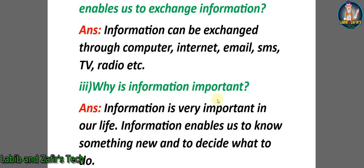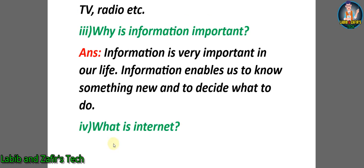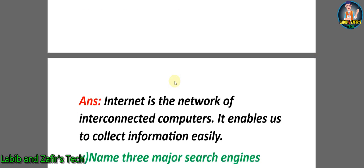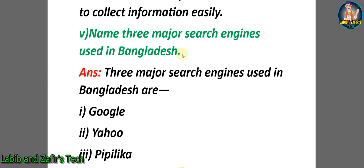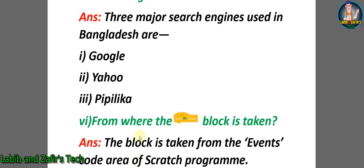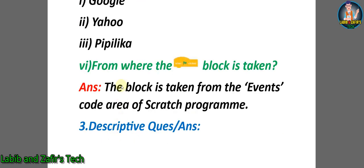Third short question: why is information important? Answer: information is very important in our life; it enables us to know something new and to decide what to do. Fourth question: what is the internet? Answer: the internet is the network of interconnected computers; it enables us to collect information easily. Fifth question: name three major search engines used in Bangladesh. Answer: one) Google, two) Yahoo, and three) Pipilika. Sixth question: from where is the block taken? Answer: the block is taken from the events code area of the Scratch program.